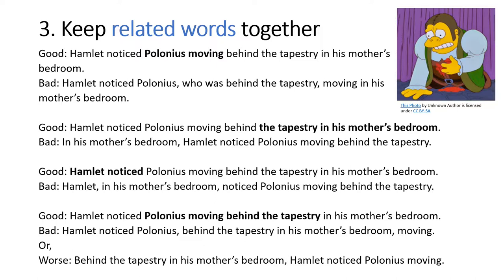Further examples: 'In his mother's bedroom, Hamlet noticed Polonius moving behind the tapestry' is acceptable, while 'Hamlet, in his mother's bedroom, noticed Polonius moving behind the tapestry' is not so good. Even worse is 'Hamlet noticed Polonius, behind the tapestry, in his mother's bedroom, moving.' Or 'Behind the tapestry in his mother's bedroom, Hamlet noticed Polonius moving' — this last sentence is an example of a dangling participle, where the sentence structure makes it unclear who the prepositional phrase is referring to. Is it Hamlet or Polonius behind the tapestry? Dangling participles exemplify the importance of keeping related words together.